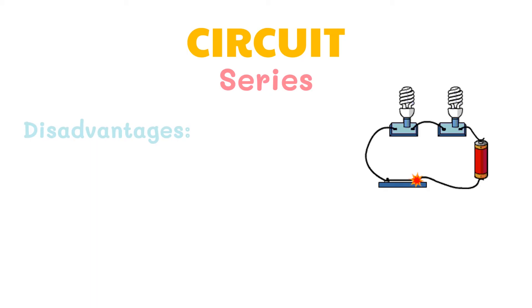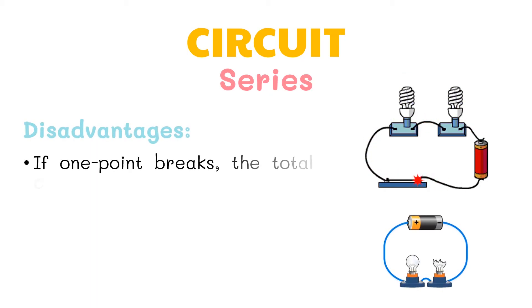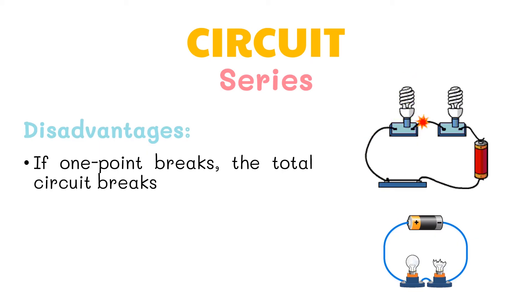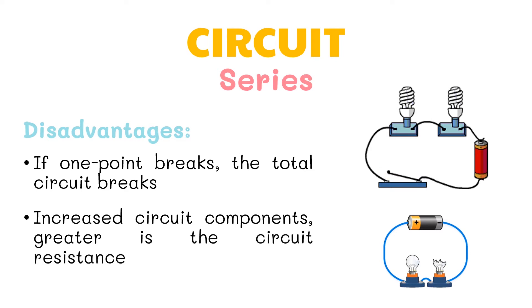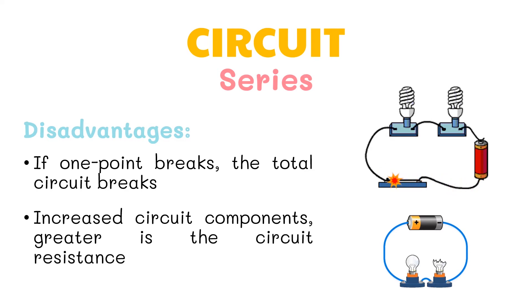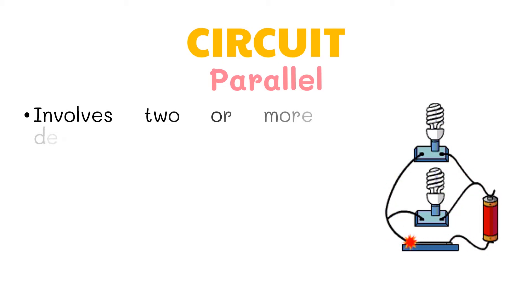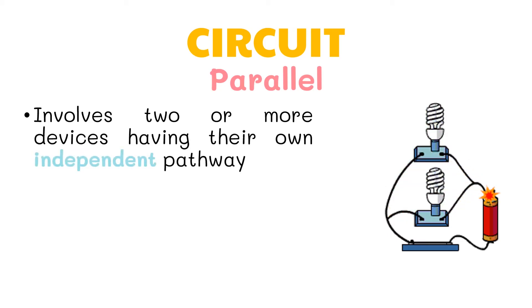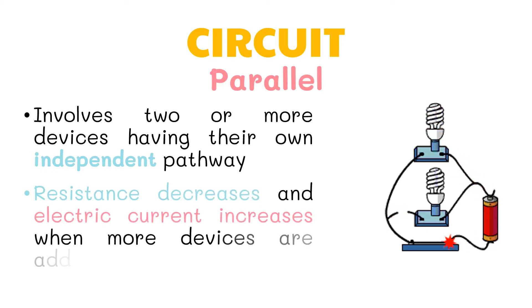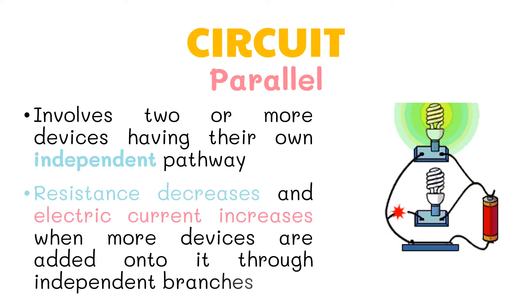The disadvantages of a series circuit: one, if one point breaks, the total circuit breaks; and two, because of increased circuit components, the circuit resistance is greater. Now, a parallel circuit involves two or more devices having their own independent pathway. The resistance decreases and electric current increases when more devices are added through independent branches.